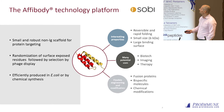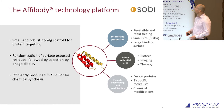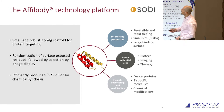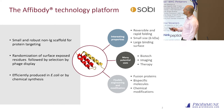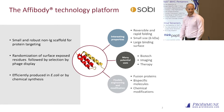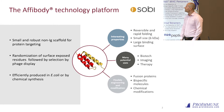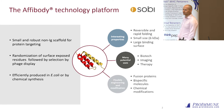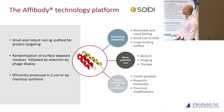Affibody technology is a small and robust non-IgG scaffold for protein targeting. Originally it's derived from protein A, so it's a Staphylococcus aureus protein, but it's heavily modified. Still, it's not of human origin, so you can understand it's very important to assess the immunogenicity, the potential immunogenicity of the candidates we have.